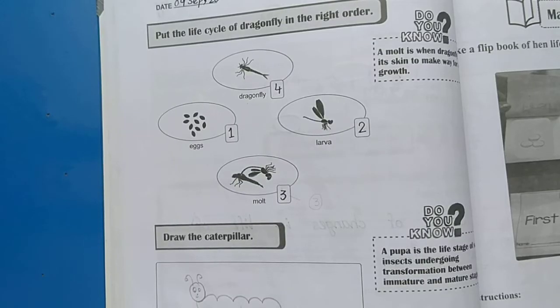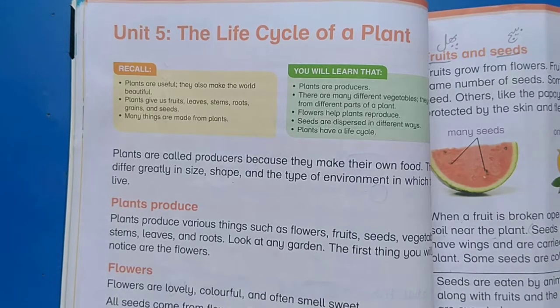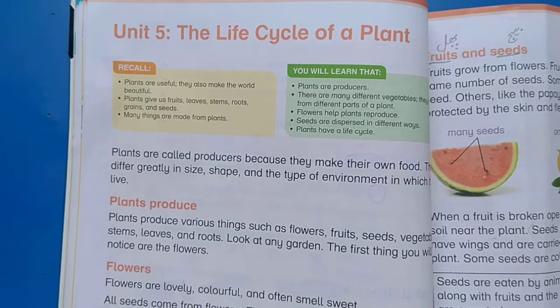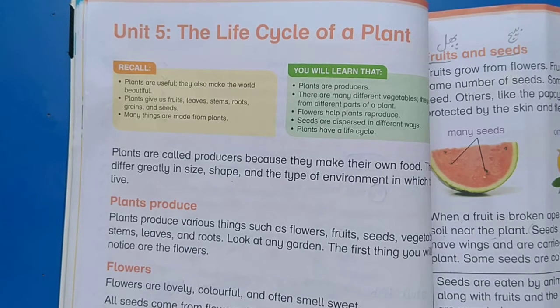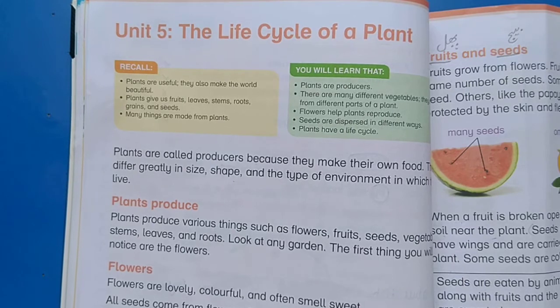Now open the science reading book, page number 42, unit 5. Our topic is the life cycle of a plant.